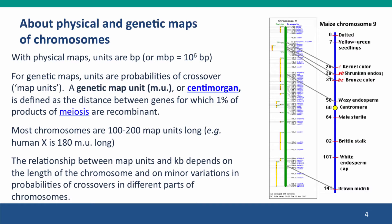Now, a word about physical maps and genetic maps. As we mentioned in Module 7, a physical map — here for chromosome 9 of maize — is constructed from the DNA sequence. So it's a description of the physical structure, the DNA sequence of the DNA. The genetic map is an indirect measure that was inferred from recombination frequencies.